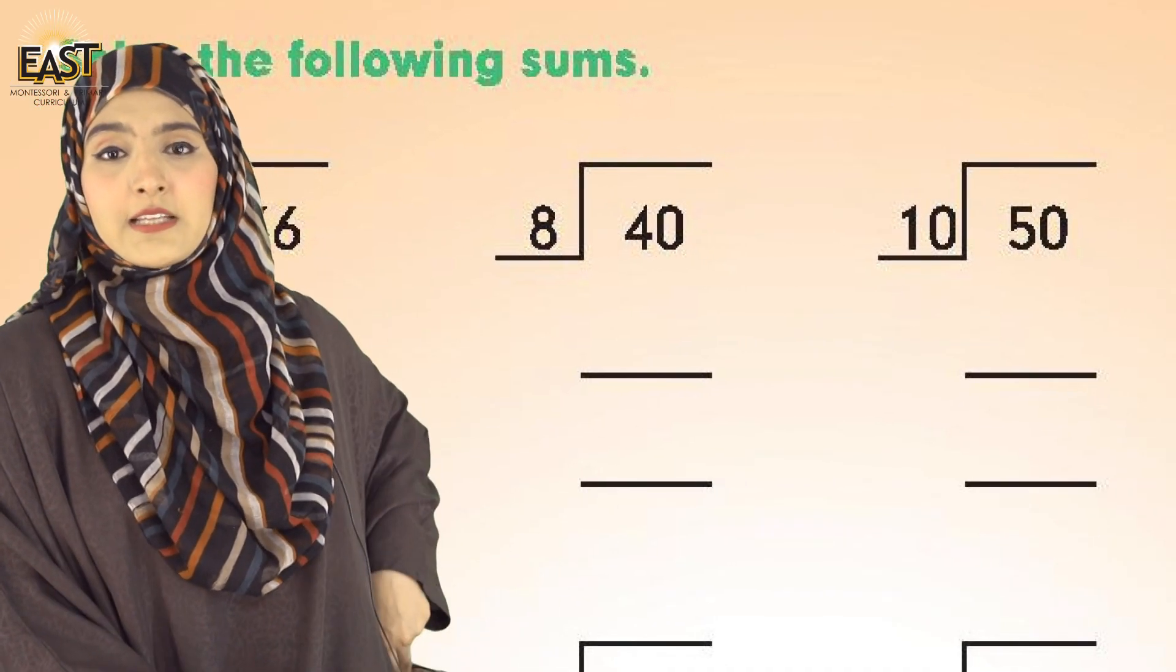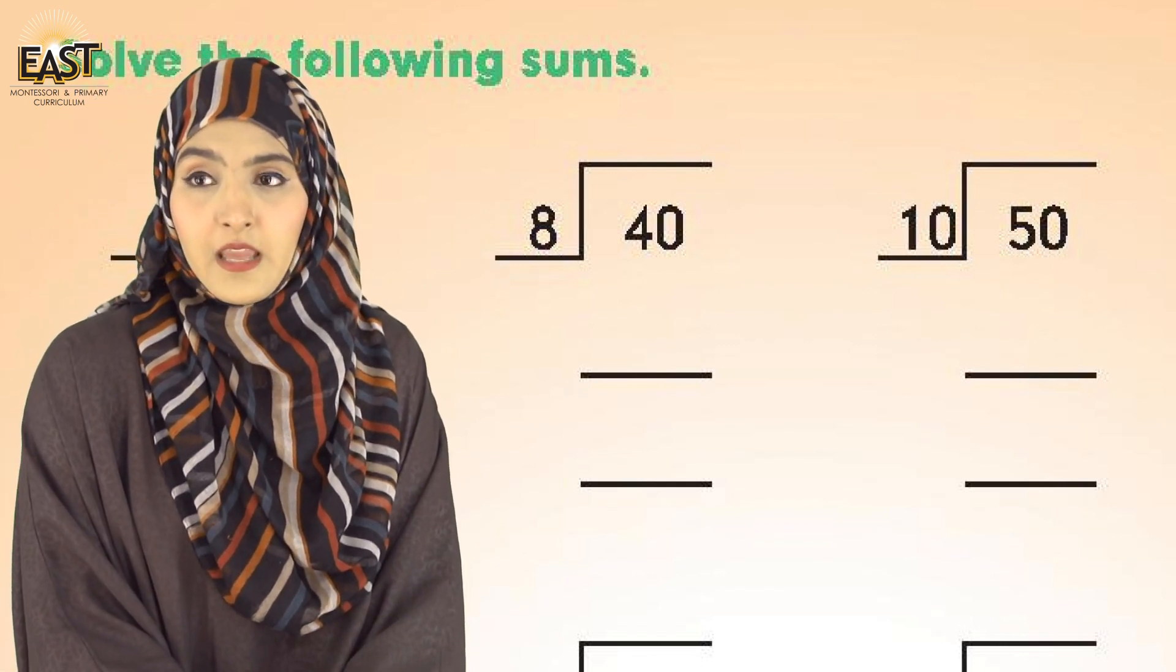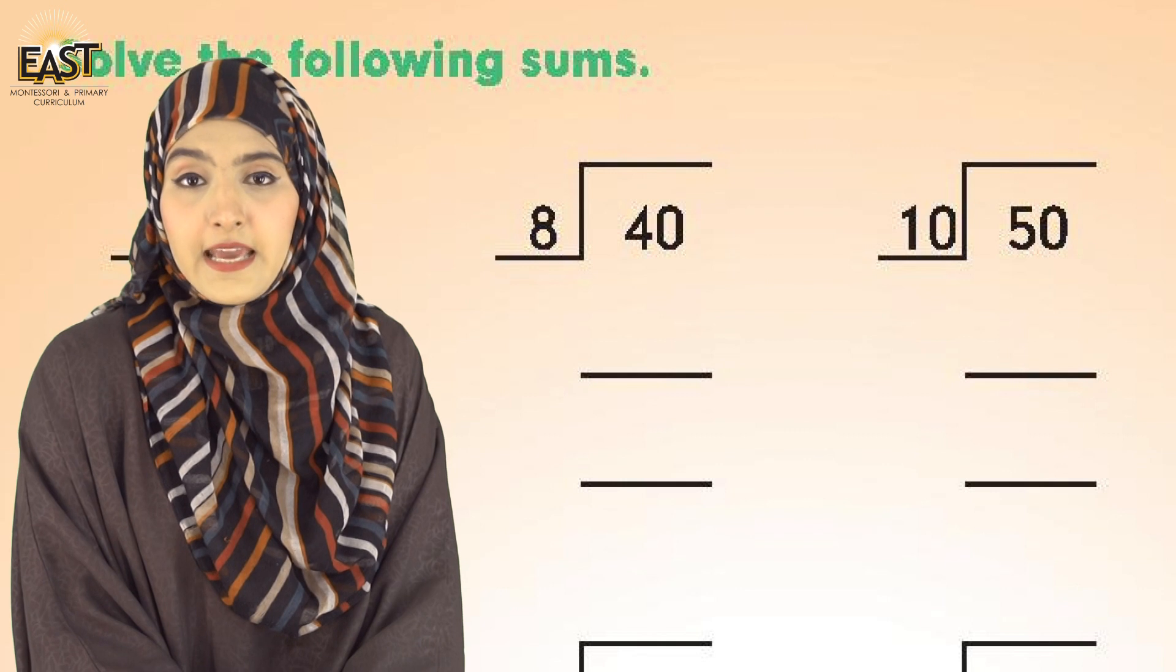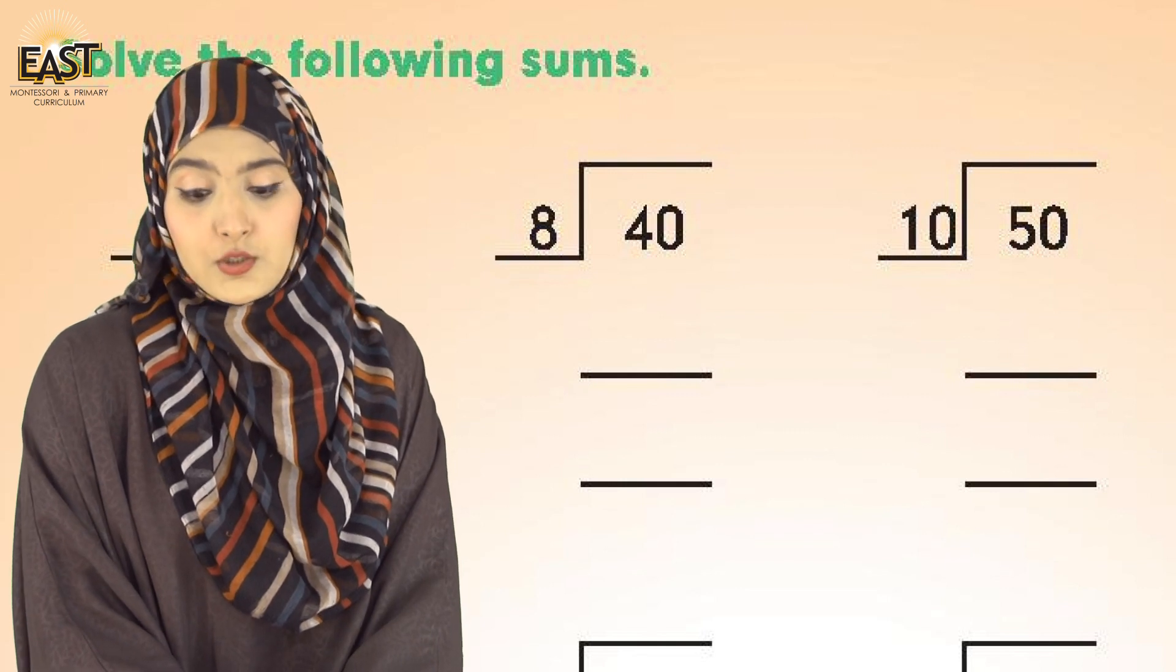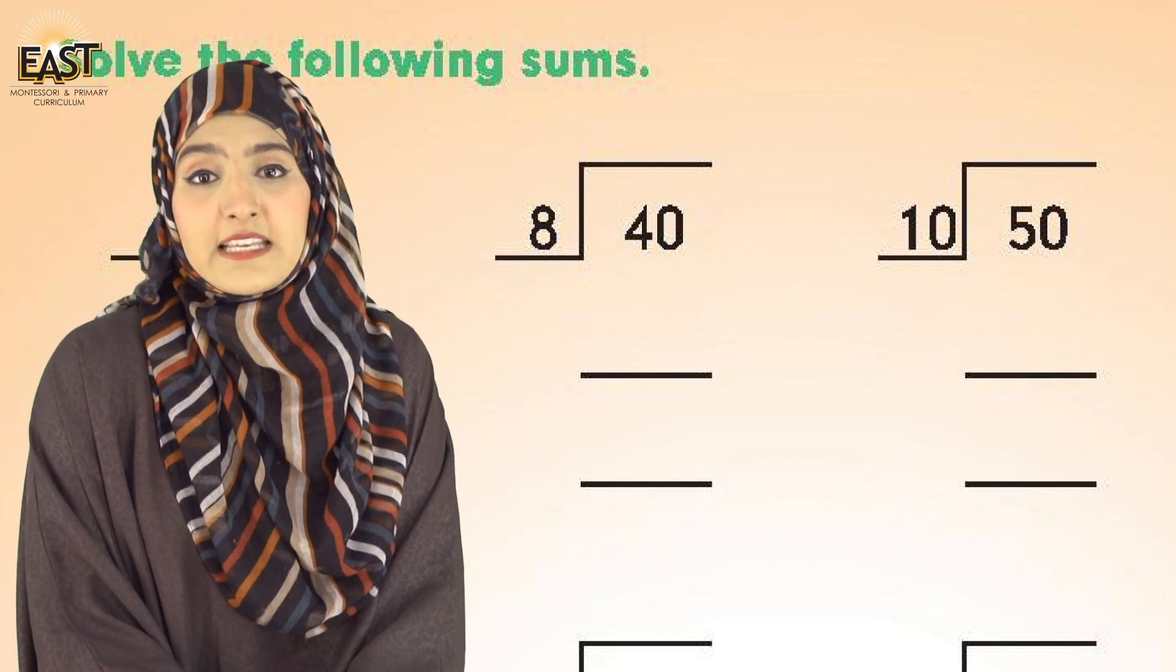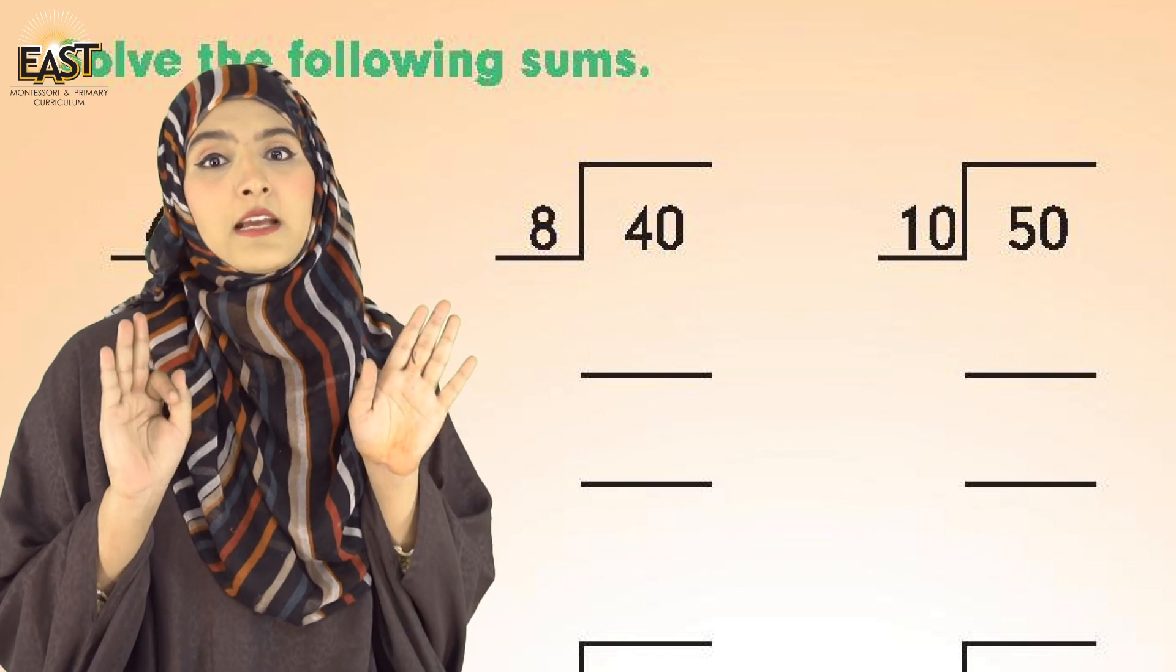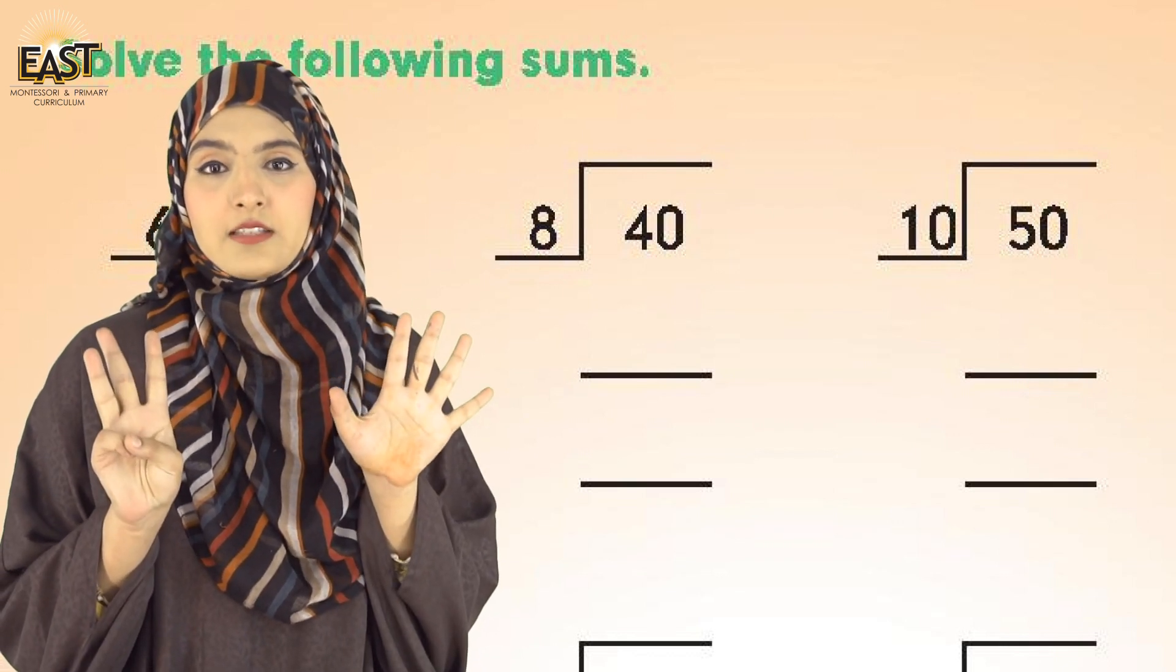Which is 8. We have to divide 40 by 8. If we have 40 candies and total 8 friends, how many candies will each friend get? There are 8 friends total.